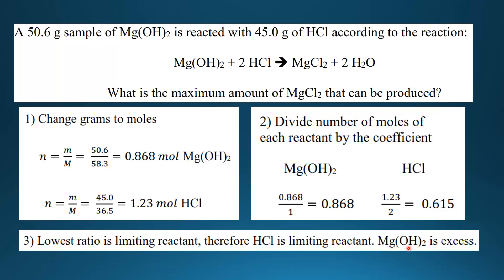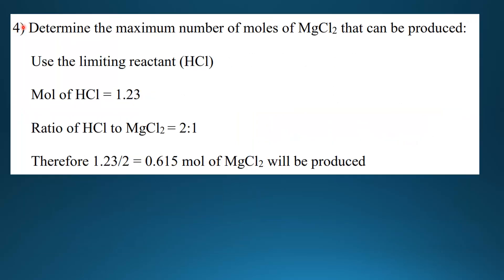Since hydrochloric acid is the limiting reactant, the magnesium hydroxide is in excess. We can now determine the maximum number of moles of magnesium chloride that can be produced. We use the limiting reactant HCl: we have 1.23 moles of HCl. The ratio of HCl to MgCl₂ according to the balanced equation is 2 to 1, so 1.23 moles of HCl produces half as much magnesium chloride. Dividing 1.23 by 2 gives 0.615 moles of magnesium chloride.